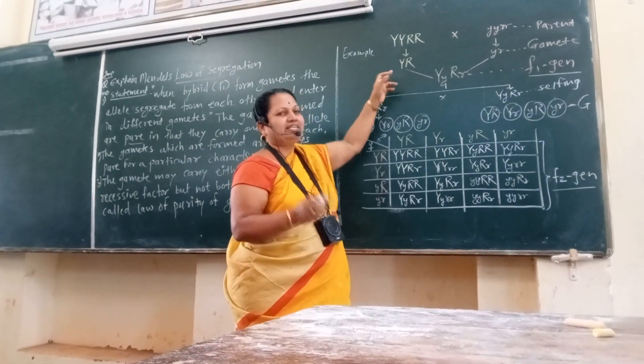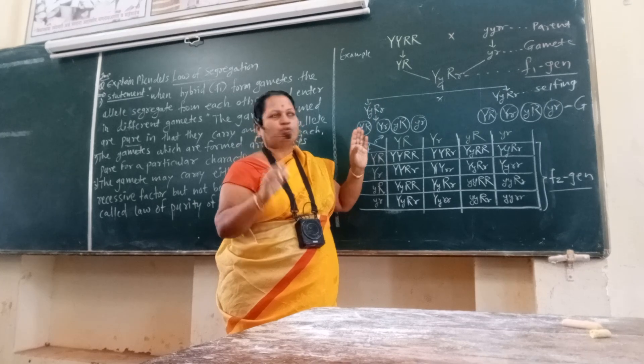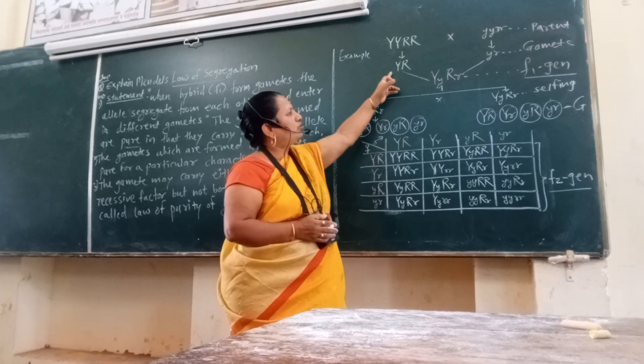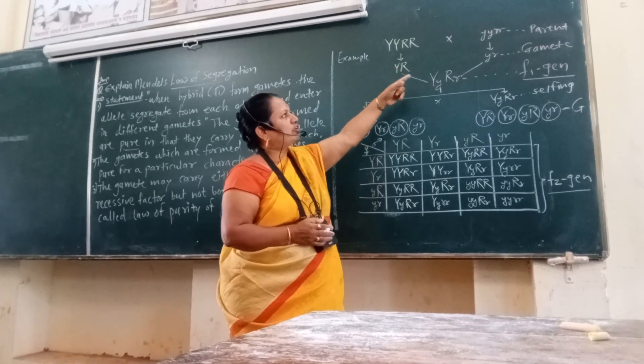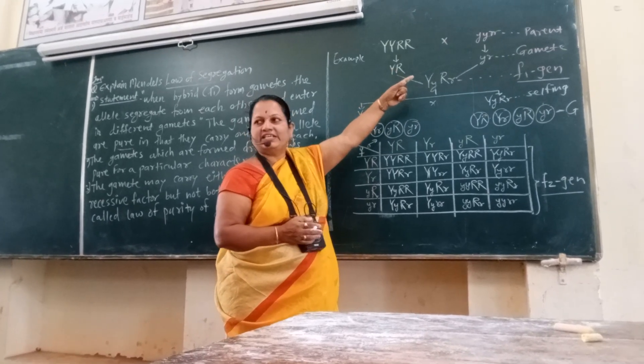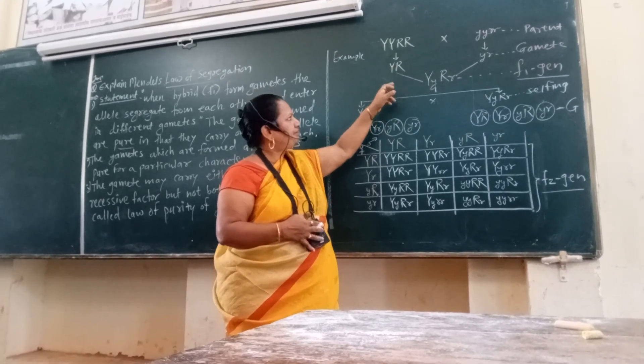For example, we can see clearly here in a dihybrid cross, where a yellow round pea plant is crossed with a green wrinkled pea plant.